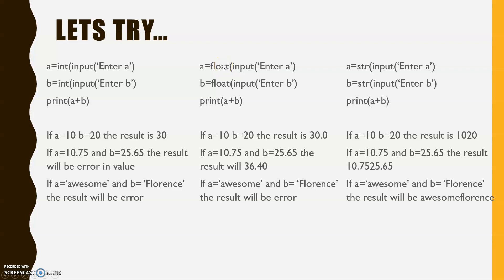For float input: a = float(input('Enter a')), b = float(input('Enter b')). If a = 10 and b = 20, the result will be 30.0, because float can also accept whole number values and always returns decimal format. If we give decimal values like 10.75 and 25.65, the result will be 36.4. If we give string values, it will create an error because float does not accept alphabetical values.